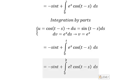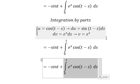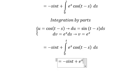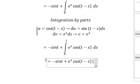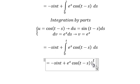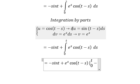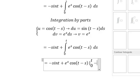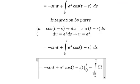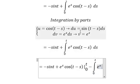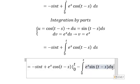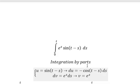So we have u multiplied by v. We have the integration from zero to t, and that gives us u multiplied by v. We know that this one equals to this one.